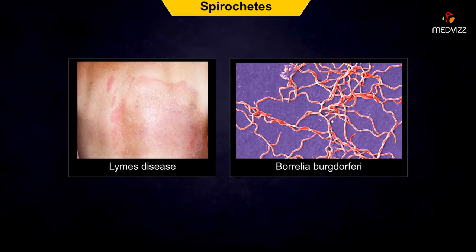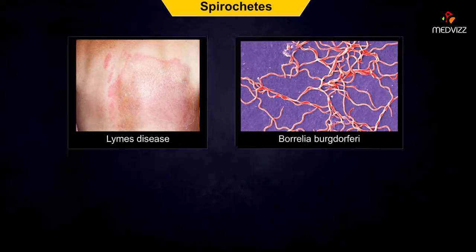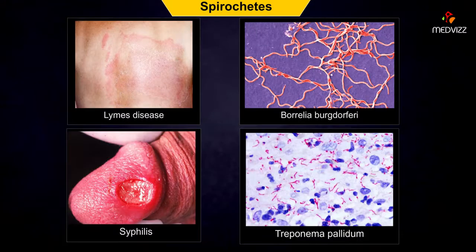Lyme disease is caused by a spirochete called Borrelia burgdorferi. Another spirochete, Treponema pallidum, causes syphilis.